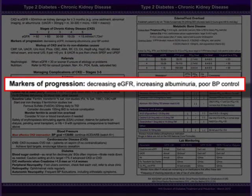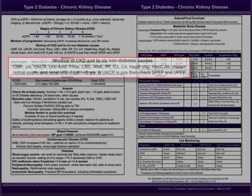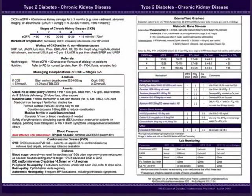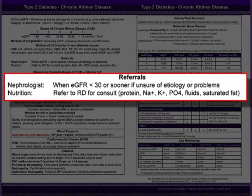Markers that CKD is progressing include decreasing eGFR, increasing albuminuria, and poor blood pressure control. The following lab work is recommended in the initial workup of CKD, and to rule out non-diabetes causes of CKD. Remember that not all CKD in patients with diabetes is diabetic nephropathy. Refer your patient to a nephrologist when their eGFR is less than 30 milliliters per minute, or sooner if you are unsure of the etiology of the kidney disease, or if you are having difficulty managing any of the complications.